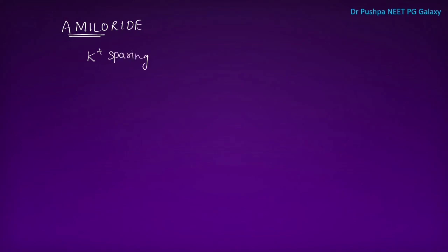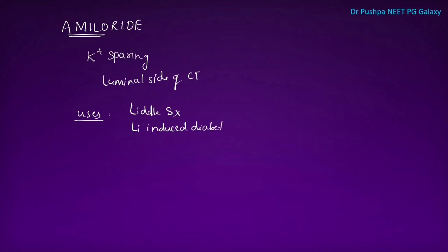Amiloride is an epithelial sodium channel blocker and is also potassium-sparing. It acts from the luminal side of the collecting duct. Uses include Liddle syndrome, where there are congenitally overactive epithelial sodium channels. It is also used in lithium-induced diabetes insipidus and cystic fibrosis.